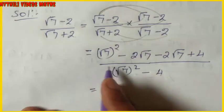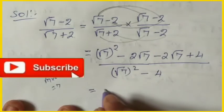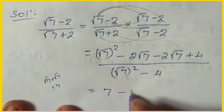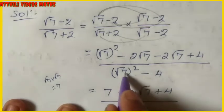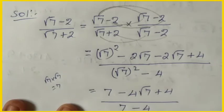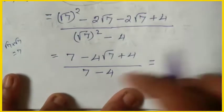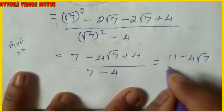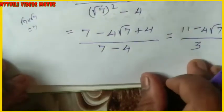Now simplify: √7 × √7 = 7. In the numerator: 7, then −2√7 − 2√7 = −4√7, then +4. So numerator = (7+4) − 4√7 = 11 − 4√7. Denominator = 7 − 4 = 3. So the expression equals (11 − 4√7) / 3.